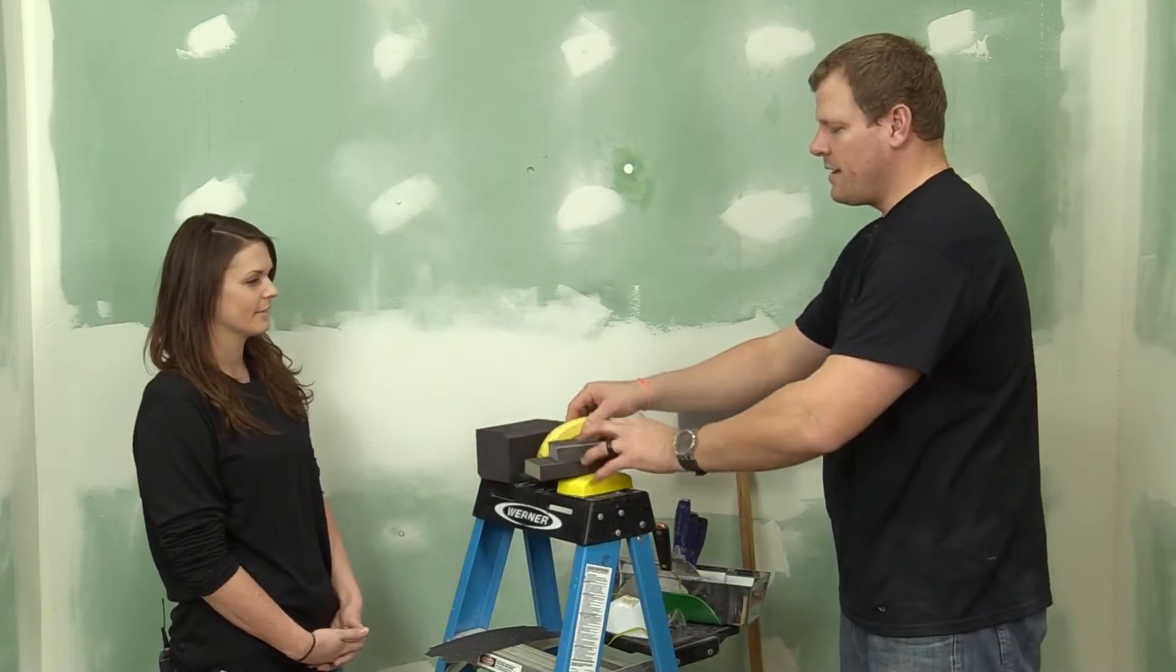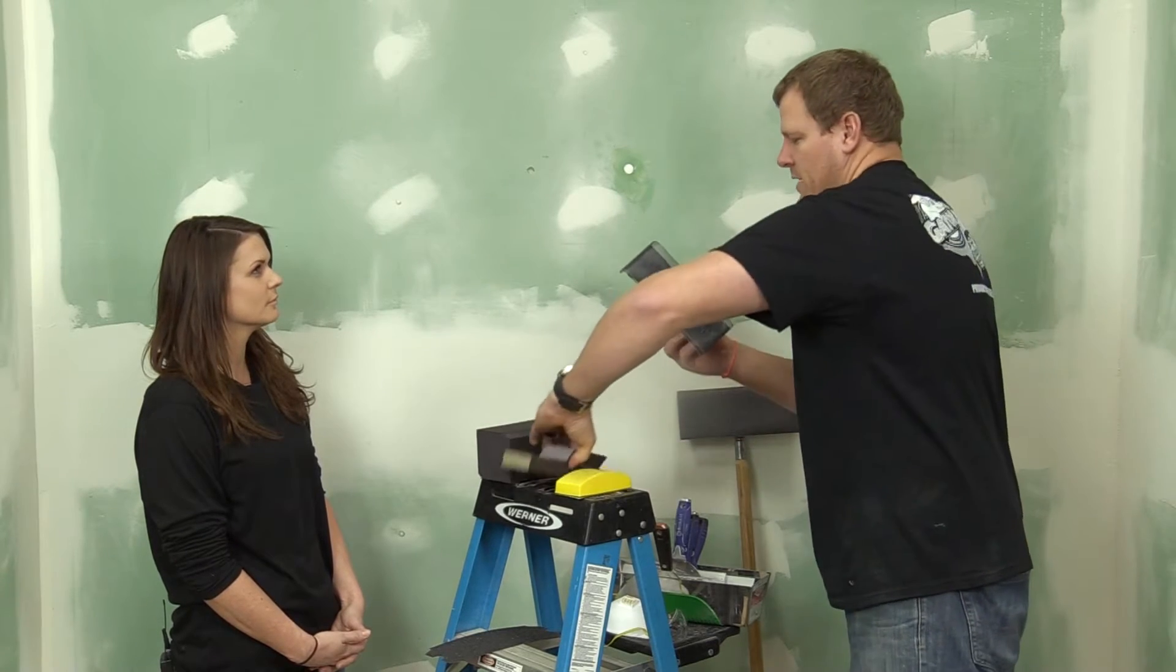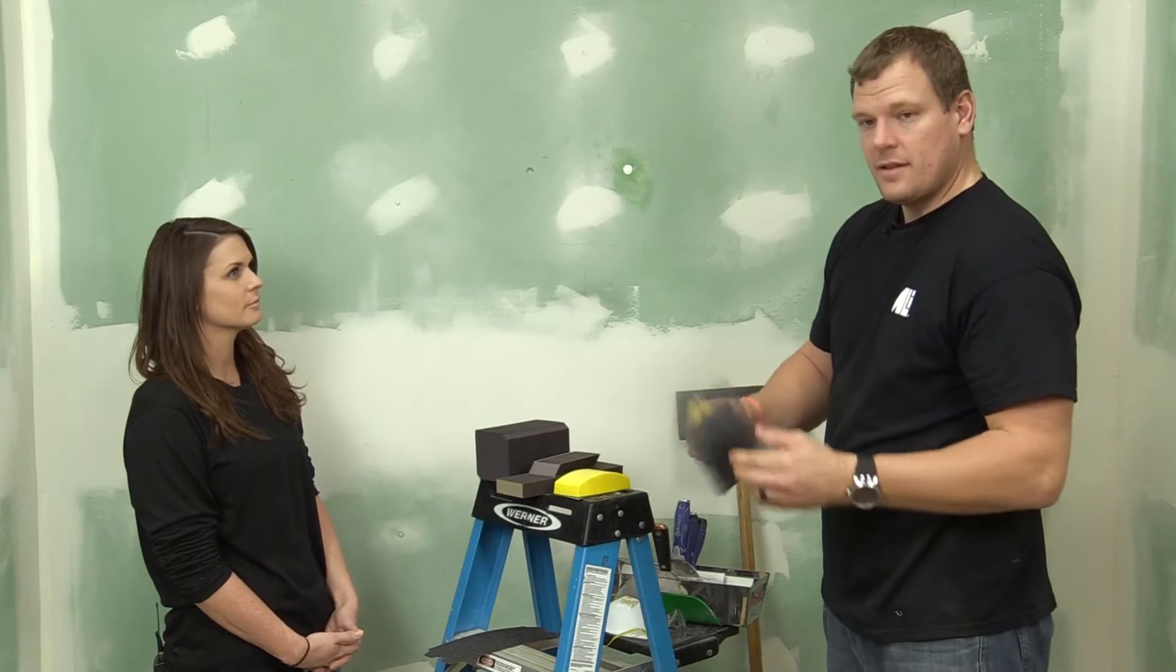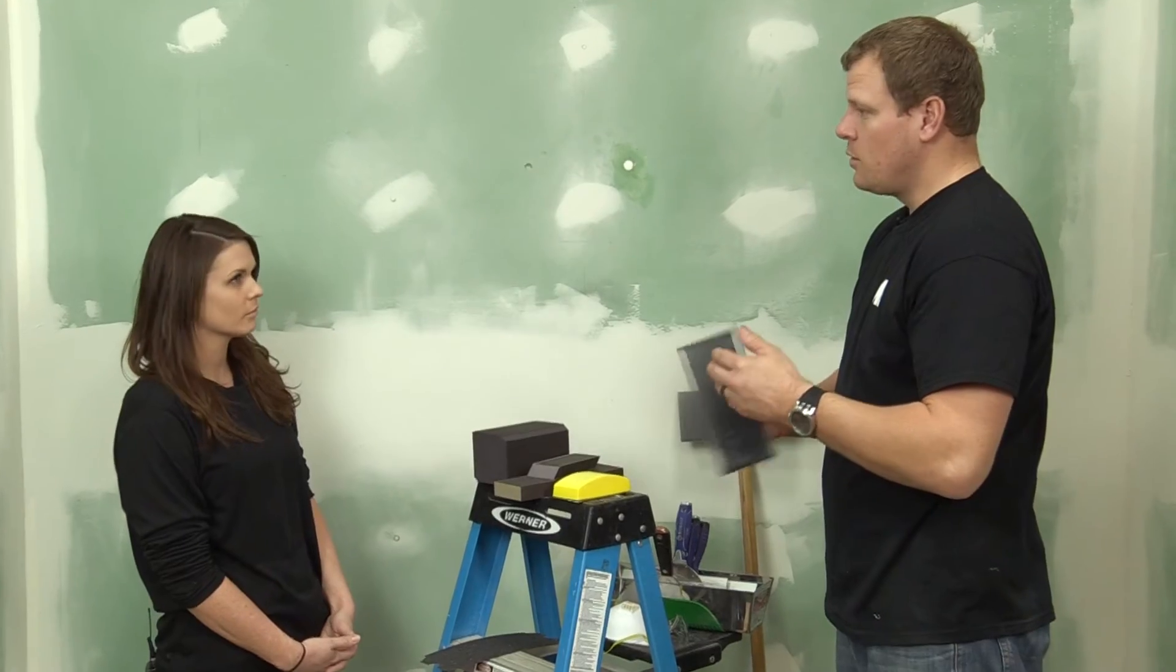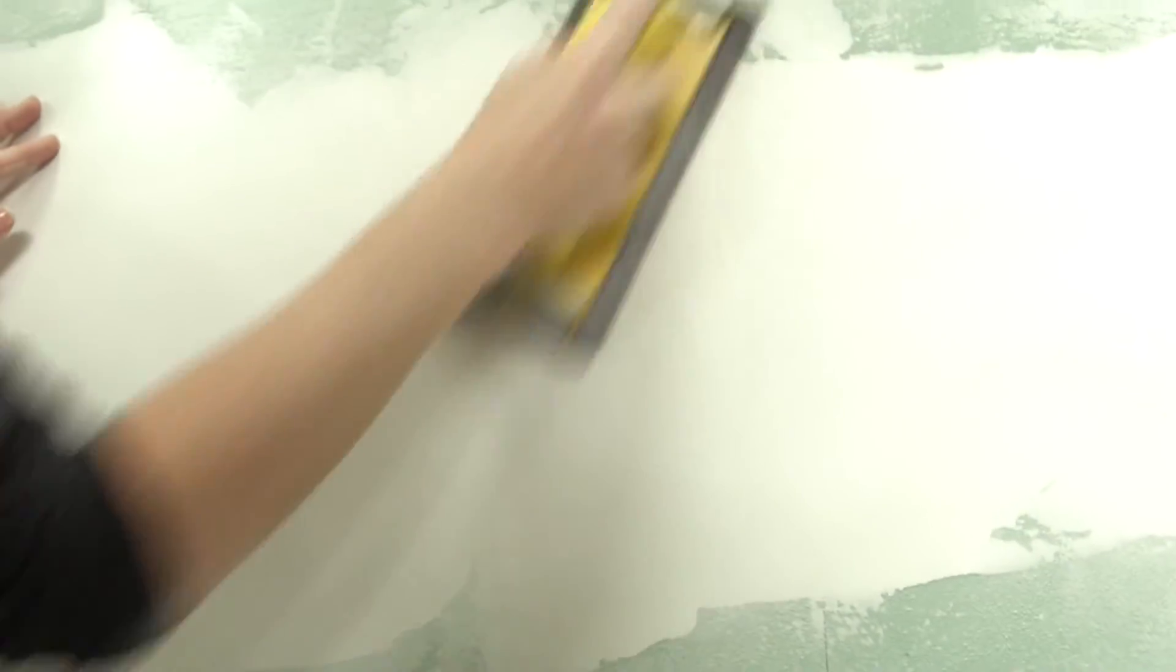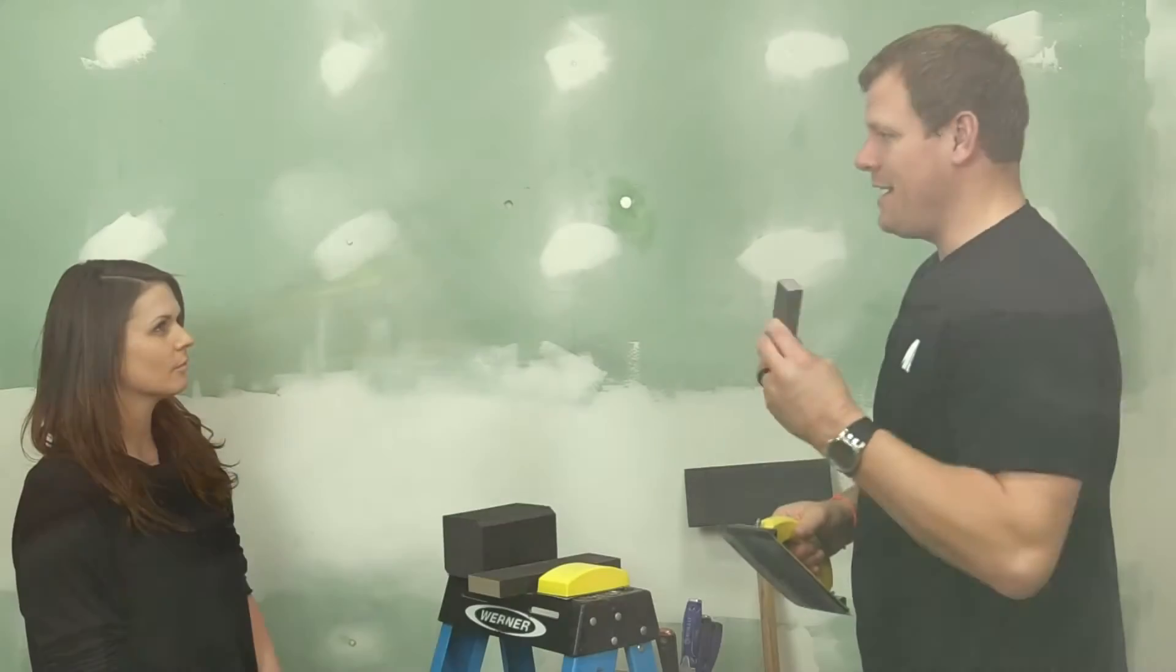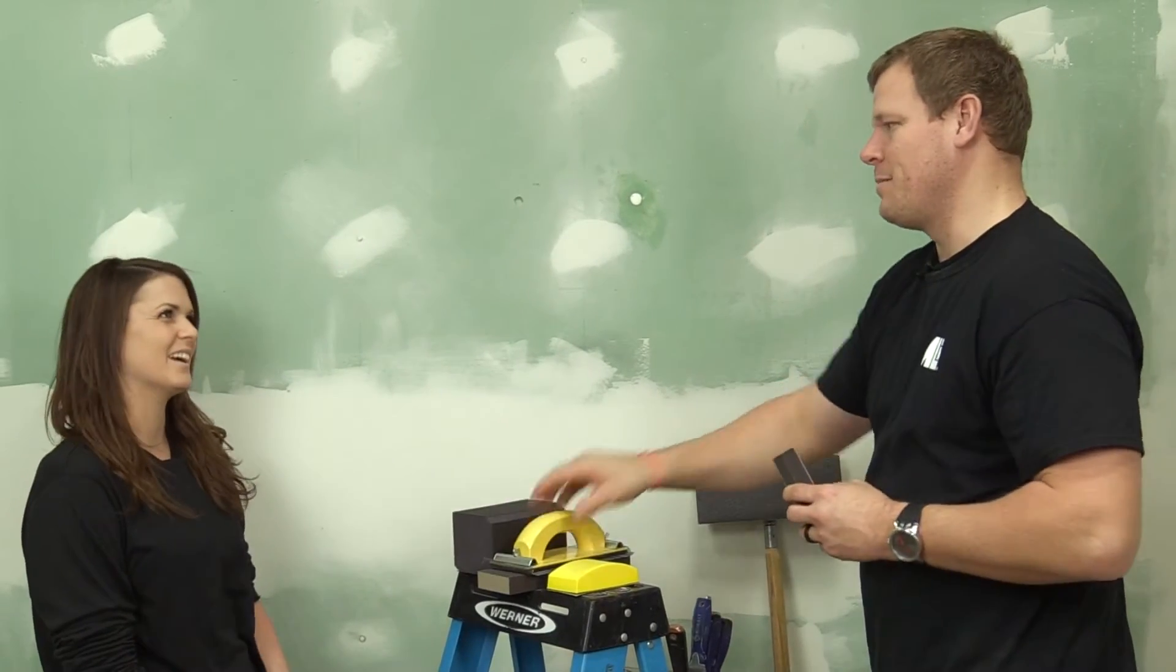I also like this hand sander that has clamps that will hold the mesh or it'll actually hold paper as well. It's nice to reach certain areas. It's just a more controlled grip versus your sanding block, but you can't do anything without a sanding block.